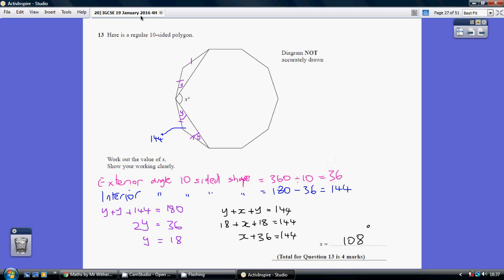Because exterior angles of a regular shape always add up to 360, so each exterior angle will be 36, so an interior angle of a 10-sided shape will be 180 less 36, which is 144.